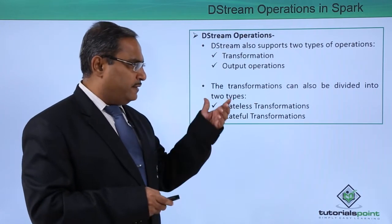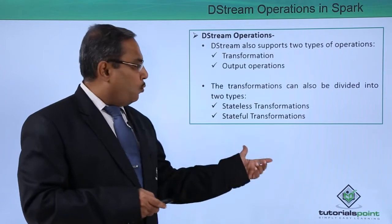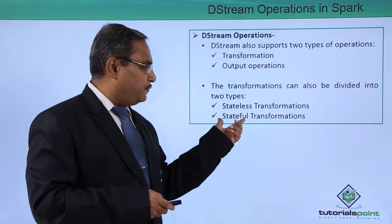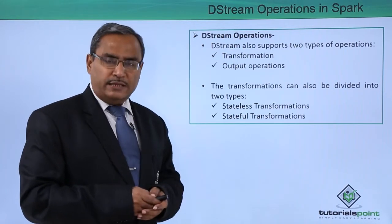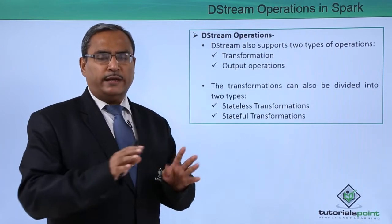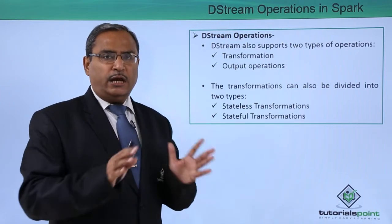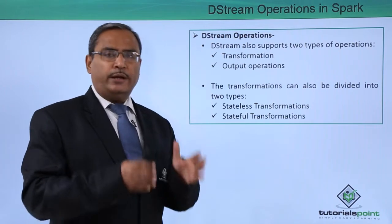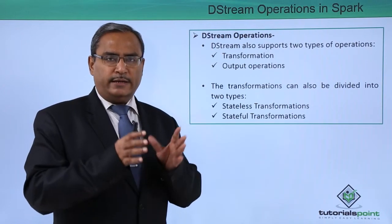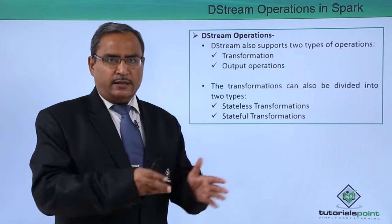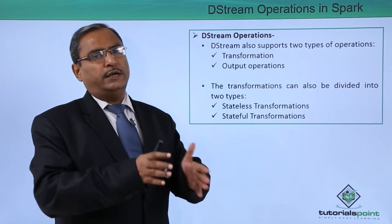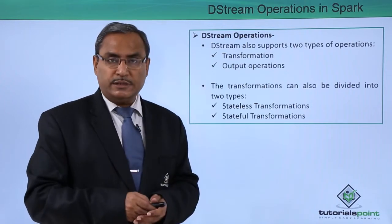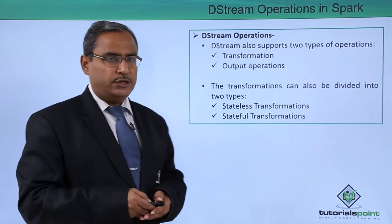The transformations can be divided into two types: one is the stateless transformations and the other is the stateful transformations. Stateless transformation means all the batches will be working independently — they are not depending on each other. In case of stateful transformations, the batches are done in an intermediate way, meaning the output of one batch will be the input of the next batch. That is why it is called stateful transformation.